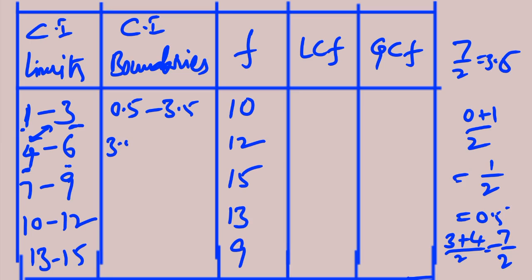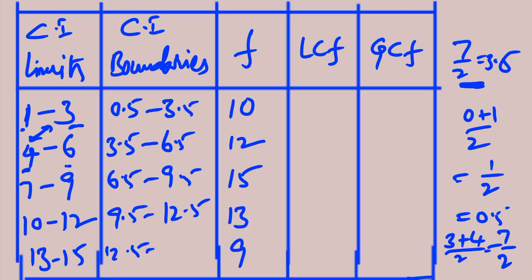3.5 also becomes the lower boundary of the second class interval. For the second class interval's upper boundary, take the average of 6 and 7: that gives 6.5. Continuing this way: 6.5 to 9.5, then 9.5 to 12.5, then 12.5 to 15.5. These are the boundaries of the given class intervals. Since the upper boundary of one class equals the lower boundary of the next, these become exclusive class intervals.